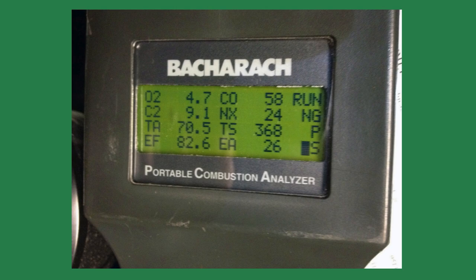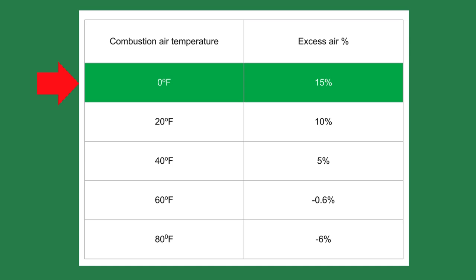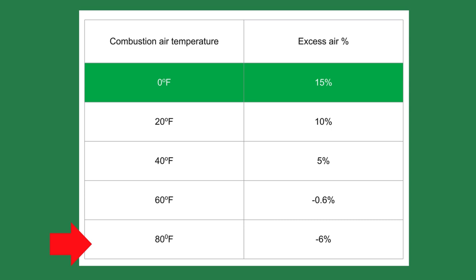We adjust the air to fuel ratio on the coldest days because the loop heats slower and cools quicker. Consider this scenario: it's a cold day, around zero degrees Fahrenheit, and we set the boiler and burner for 15 percent excess air or 3 percent oxygen. When the outside air temperature rises to 40 degrees, the excess air drops to 4.6 percent or 1 percent oxygen — perilously close to sooting. At 60 degrees, the excess air is negative 0.6 percent — we are definitely sooting. At 80 degrees outside, the burner is operating at negative 5.8 percent excess air — a real mess.